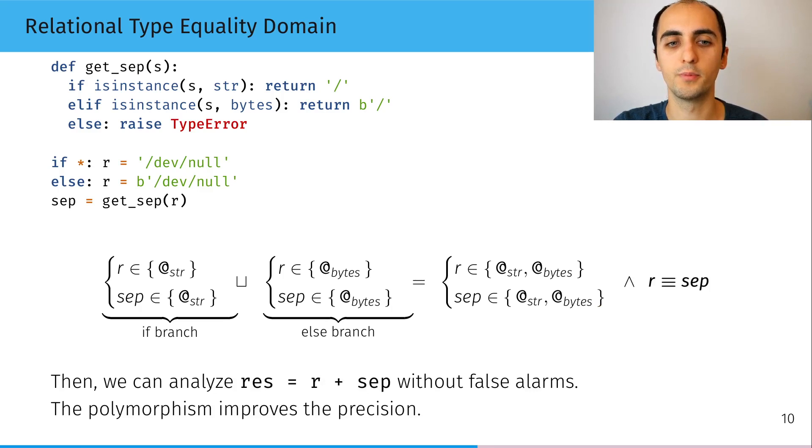This allows us to be more precise. For example, then we'll be able to analyze this statement where we concatenate r and sep without raising any false alarm.